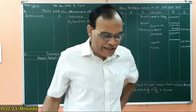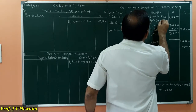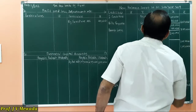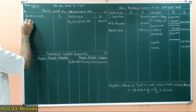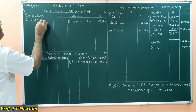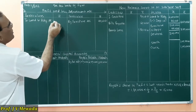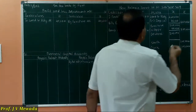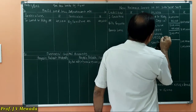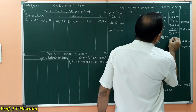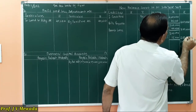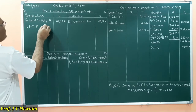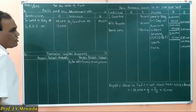Land and building is to be depreciated at 10%, which is 40,000, so the outer value is 3,60,000. In the Profit and Loss Adjustment Account, debit side: 'To Land and Building Account' 40,000. Also provide RDD at 5% on debtors — 5% of 3,00,000 is 15,000 — so outer value will be 2,85,000 and 15,000 will be debited to 'To RDD Account' because RDD is created at 15,000.